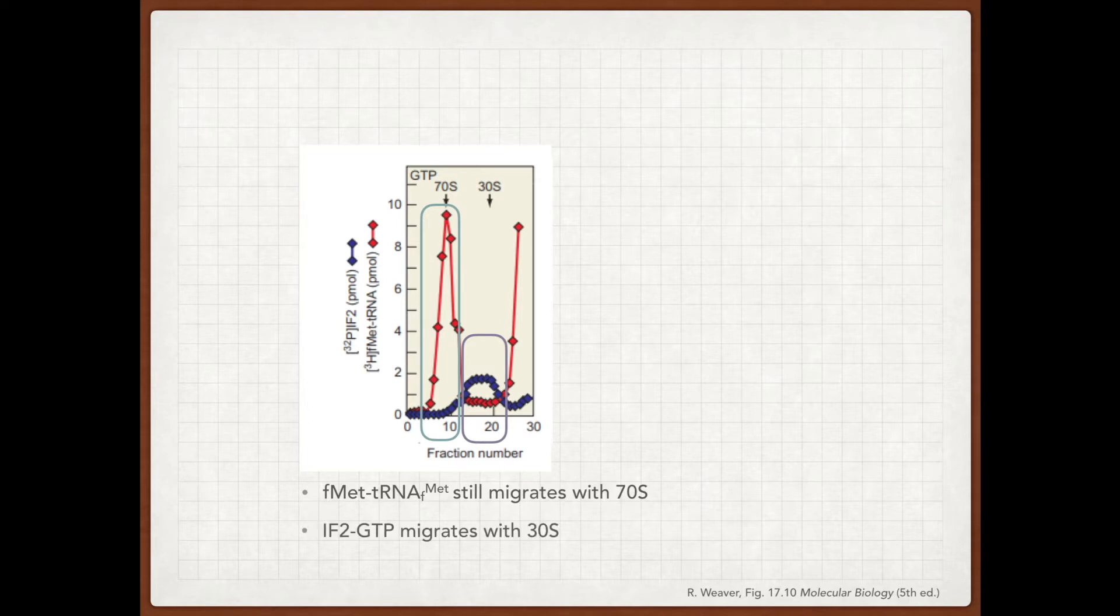So now we have two different species of complexes migrating in the column. We have this 70S with the labeled tRNA still attached to it, and then no IF2 anymore. So IF2 must have dissociated from the 70S complex, and it reassociates with a new molecule GTP on a new 30S subunit.